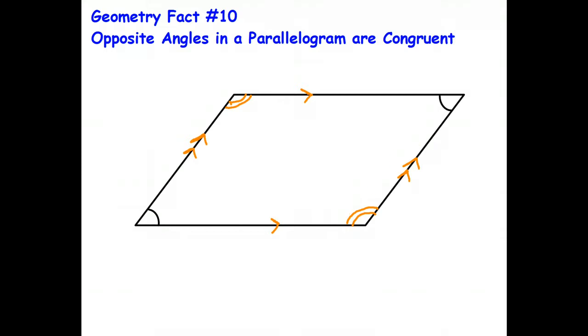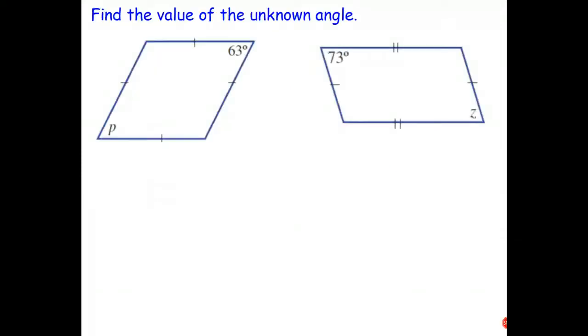So this is one of the easier facts to work with, because here I can just write down P is equal to 63 degrees. And how do I know that? Well, I know it because opposite angles of a parallelogram are equal.